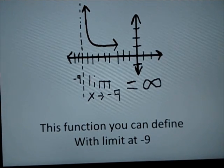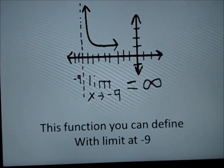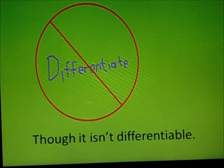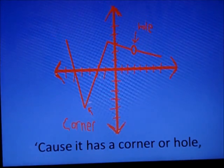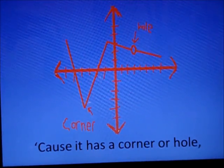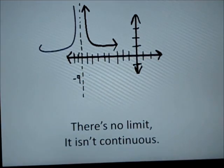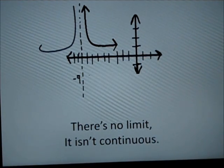This function you can define, with limit at negative 9, though it isn't differentiable. Cause it has a corner or hole, or cusp or an asymptote. There's no limit, it isn't continuous.